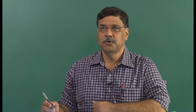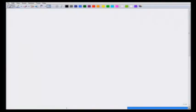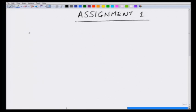In this tutorial, I will be solving the first assignment. This is assignment 1. The first problem says there are two charges +q and -q placed at a distance a from the origin on the x-axis.